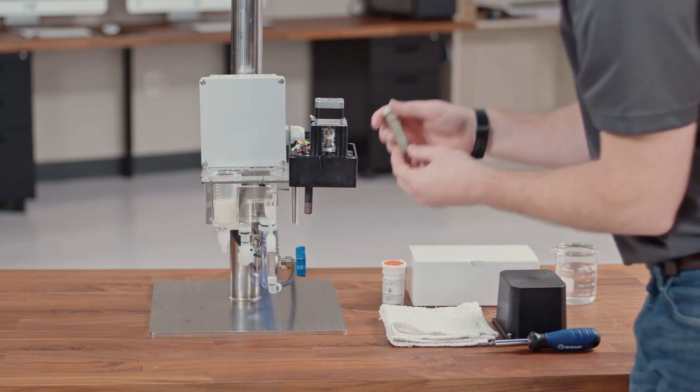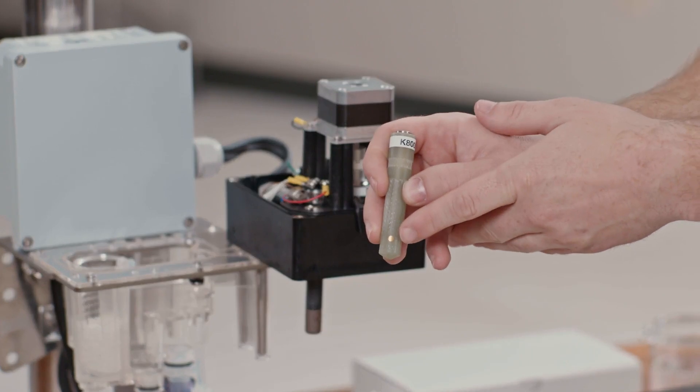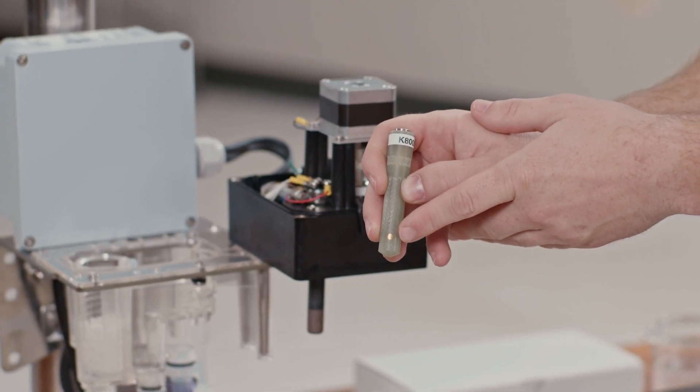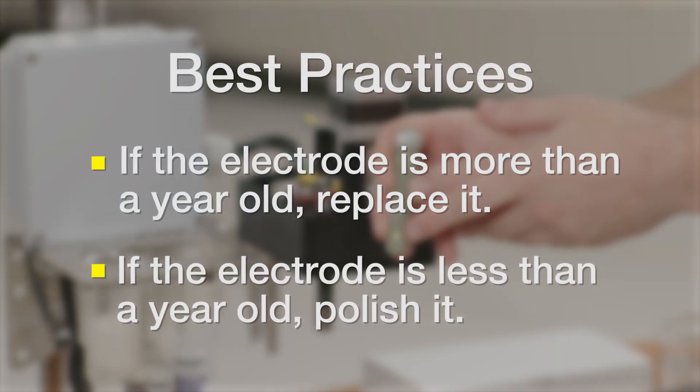Once you have removed the electrode, you can inspect it for any defects in the gold electrode. If the electrode is a year old, you can go ahead and replace it. If it is less than a year old, we recommend just polishing it to remove these defects.